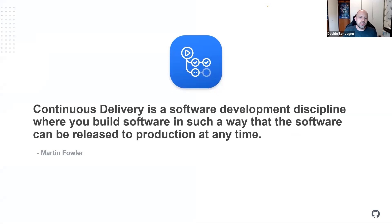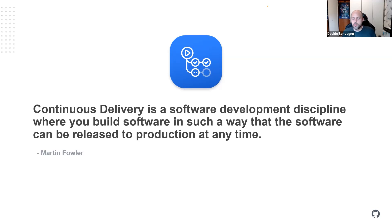Continuous delivery is sort of an umbrella term for both CI and CD, describing the practice of building software and making it releasable to production at any time. The release part is taken care of by the continuous deployment practice, which complements continuous integration — whenever an artifact is available it may be deployed to one or more environments. It's a good idea to have it deployed at least to dev in an automated way. From my experience, there aren't many enterprise clients willing or with the processes in place to continuously deploy to production, but I hope we will get there soon.